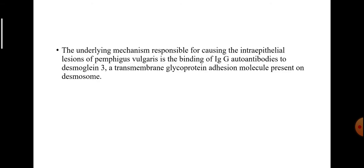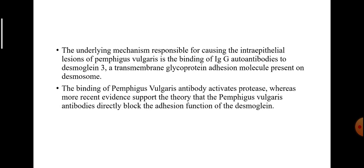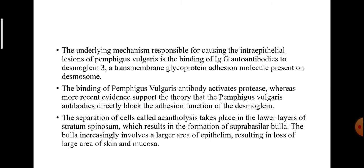The underlying mechanism responsible for causing the intraepithelial lesions of Pemphigus vulgaris is the binding of IgG autoantibodies to Desmoglein 3, a transmembrane glycoprotein adhesion molecule present on the desmosomes. The binding of Pemphigus vulgaris antibody activates proteases, and more recent evidence supports the theory that Pemphigus vulgaris antibodies directly block the adhesion function of Desmoglein 3. The separation of cells, called acantholysis, takes place in the lower layers of stratum spinosum, resulting in the formation of suprabasal bullae.